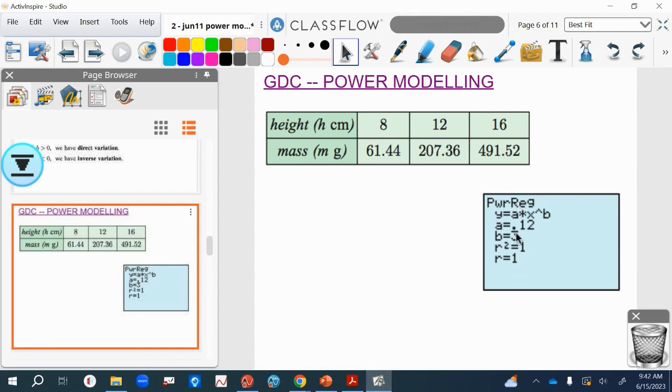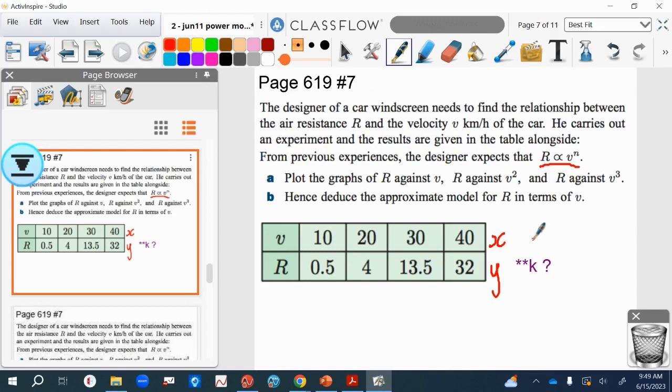So a, the coefficient of x, is 0.12, and b, the power here, is 3, which should match the numbers here. If you wanted to write it out, you would write m equals 0.12 times h to the power of b, which is 3. So you could write out the model like that.